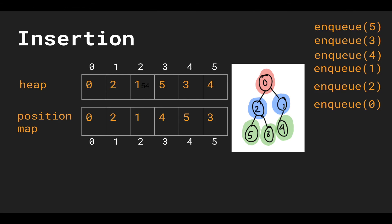Let's verify: 0 is at heap index 0, so position map at index 0 holds 0. The value 2 is at heap index 1, so position map at index 2 holds 1. The value 1 is at heap index 2, so position map at index 1 holds 2. The value 5 is at heap index 3, so position map at index 5 holds 3. The value 3 is at heap index 4, so position map at index 3 holds 4. The value 4 is at heap index 5, so position map at index 4 holds 5. This is what we want.